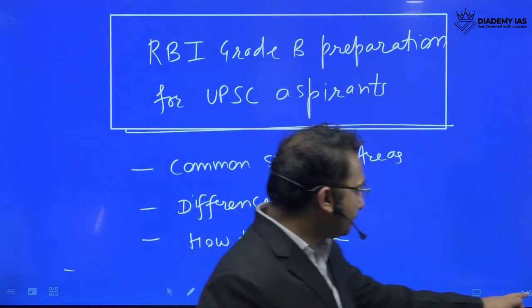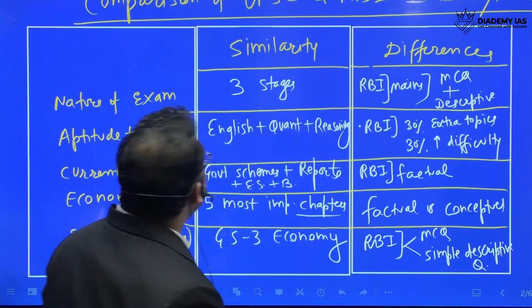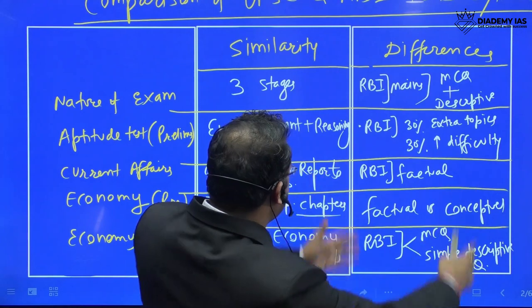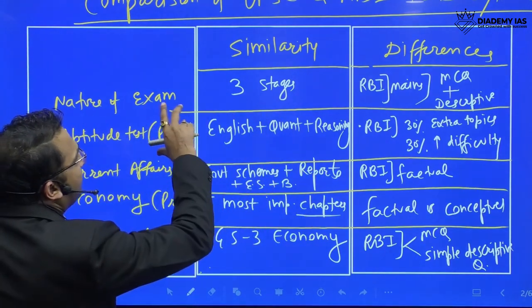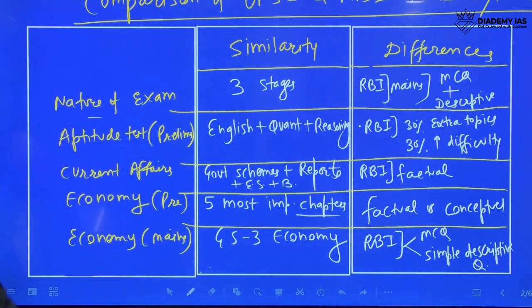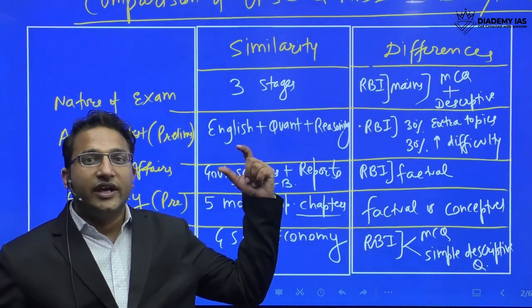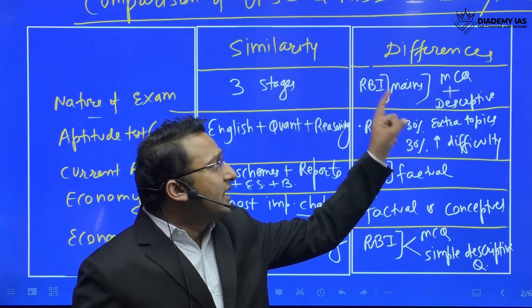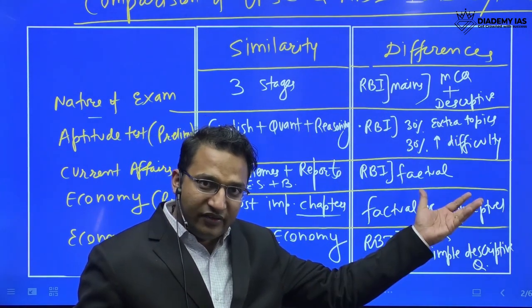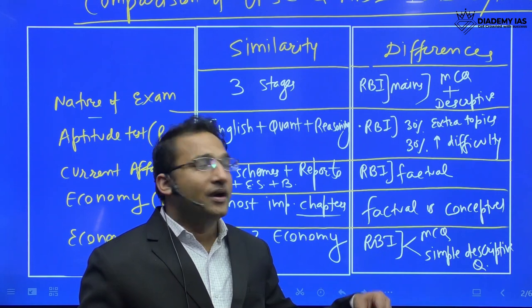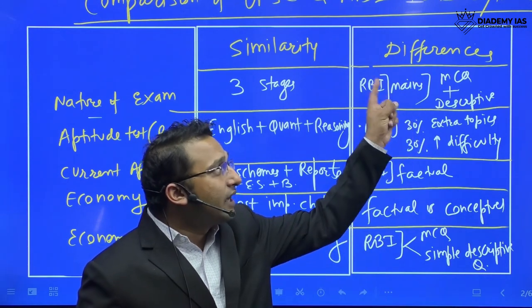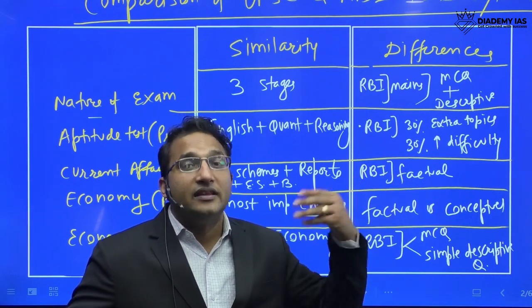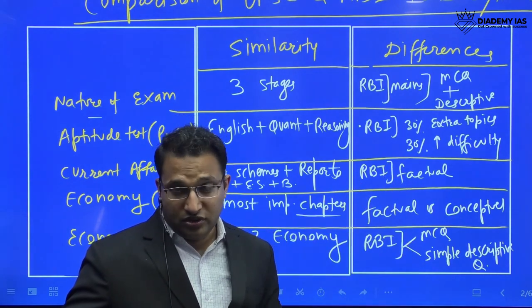Looking at the similarities and differences from different angles: first, the nature of the examination. Both RBI and UPSC have prelims, mains, and interview. The difference is that in RBI the prelims is MCQ-based, just like UPSC, but the mains has both MCQ and descriptive components — so in the mains you also get MCQs, which is a key difference in the pattern.